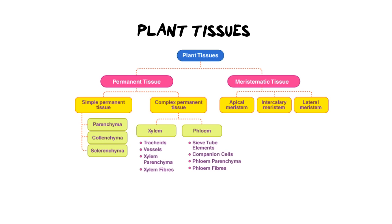Now let's quickly break down the plant tissues and then I'm going to go into more detail. Tissues come in two forms: they either come as meristematic tissue, which is tissue that is temporary — it doesn't hang around for very long in a plant, it's where growing happens — whereas permanent tissue, as the name suggests, lasts longer. Technically meristematic tissue becomes permanent tissue over time.